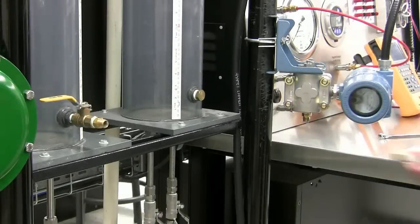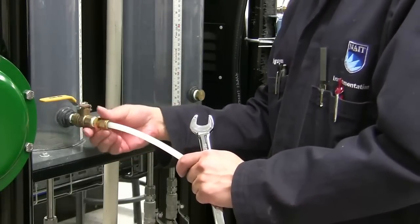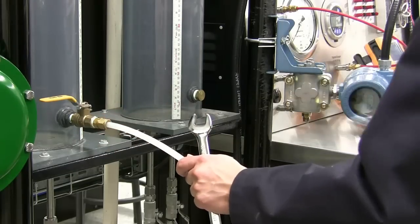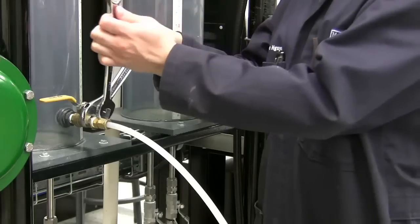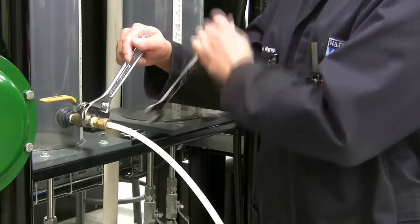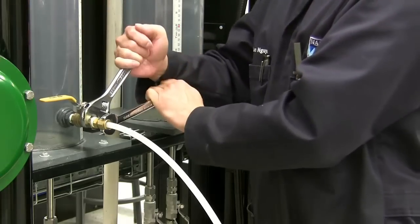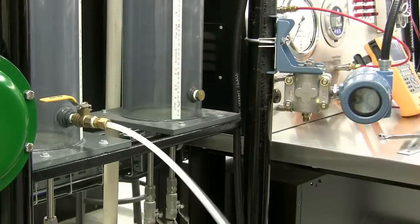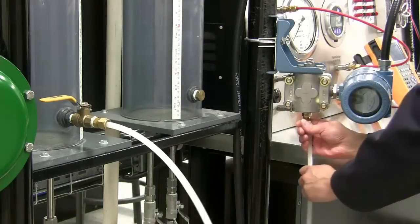When connecting to the open tank, ensure you are using the 3/8 white tubing, and use two wrenches when tightening the fitting on the bottom tap valve. Connect the other end of the tubing to the high side of the DP transmitter.